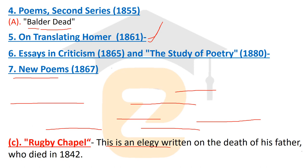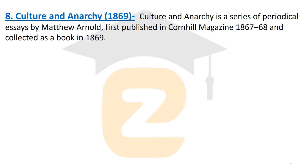Rugby Chapel is an elegy written on the death of Arnold's father, who died in 1842. Next, Culture and Anarchy was written and published between 1867 and 1869. It is a series of periodical essays by Matthew Arnold, first published in Cornhill Magazine in 1867–68, and collected in book form in 1869.